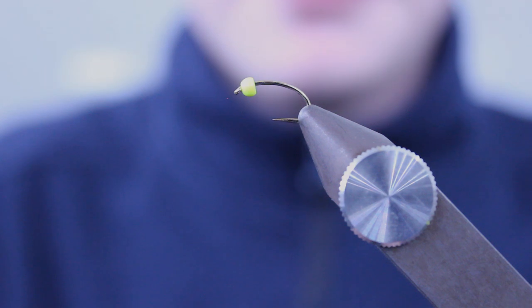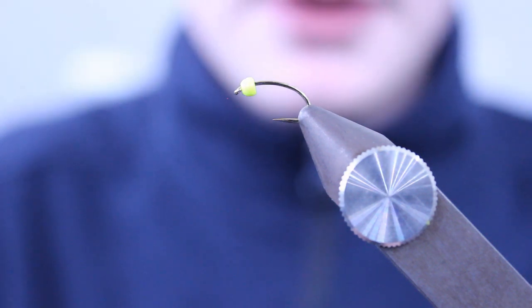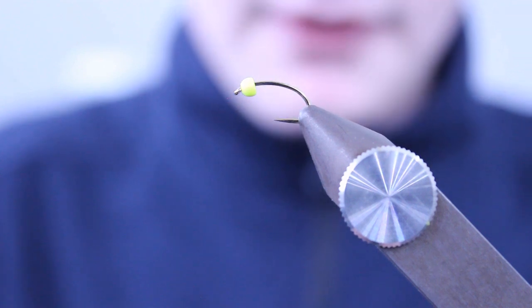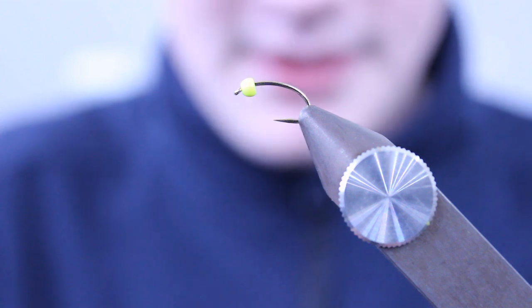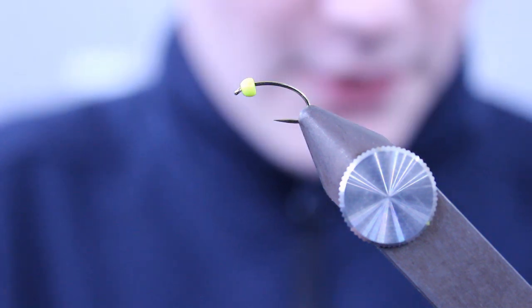Hi there, it's Brad from Angling Active Dunfermline and today I'm going to be tying a Millennium Bug variant. The hook in the vise is a Fulling Mill heavyweight grub size 12 barbless. The bead is a Fulling Mill painted brass bead size 2.8.